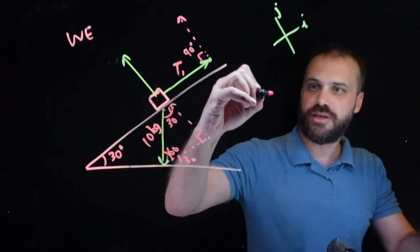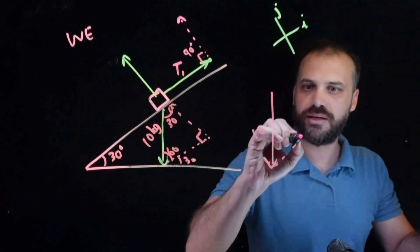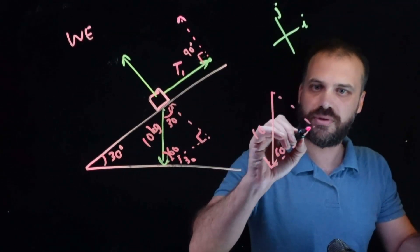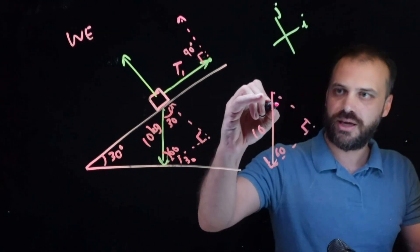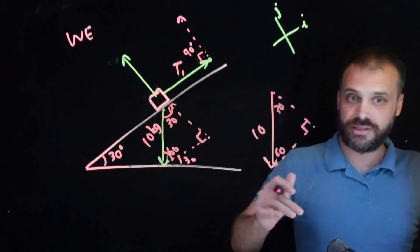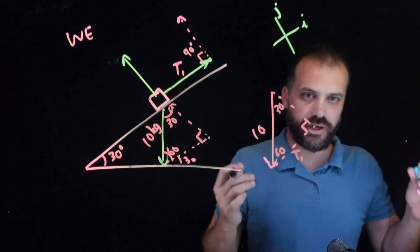So taking this, bringing it over here, we have a length of 10, we have a 60 degree angle here, we have a right angle there, and obviously a 30 degree angle there. And the thing that we're trying to find is the tension in the string, which is this thing right here.